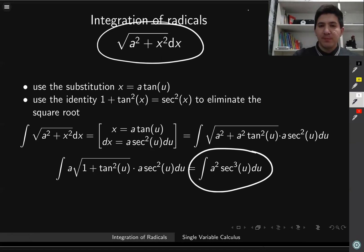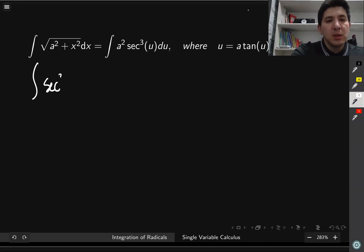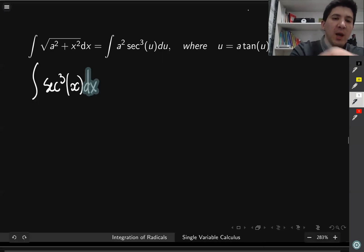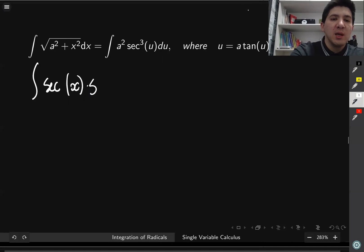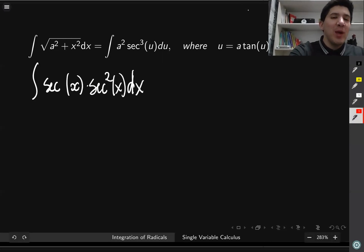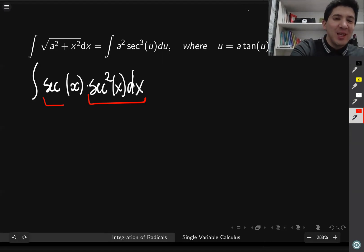We assume this will be easier than integrating the original integral. Let's integrate secant cubed of x dx. We need to use one of the trigonometric techniques called integration by parts. Instead of writing secant cubed, we write it as secant times secant squared of x dx. We can integrate secant squared because we know the derivative of tangent is secant squared, so the integral of secant squared is tangent. And we can differentiate secant.